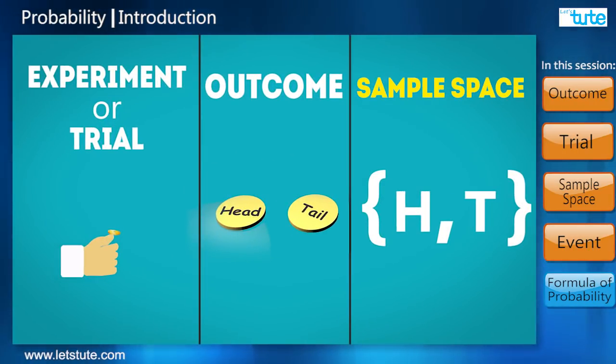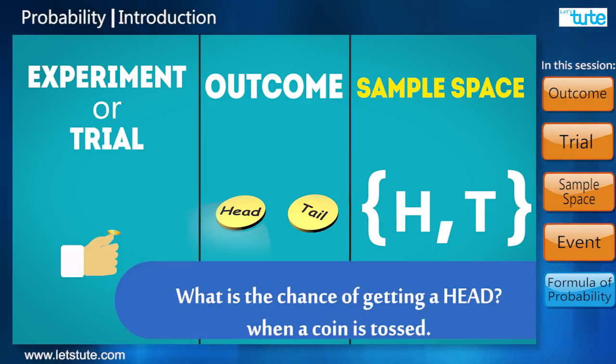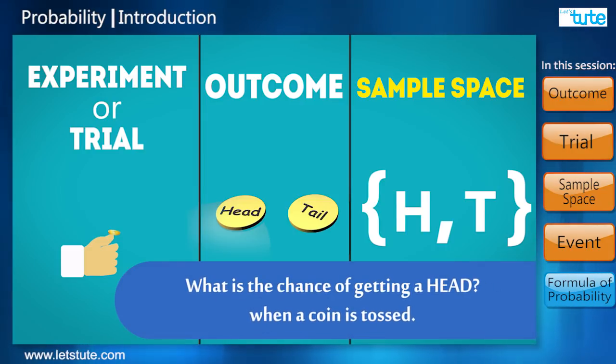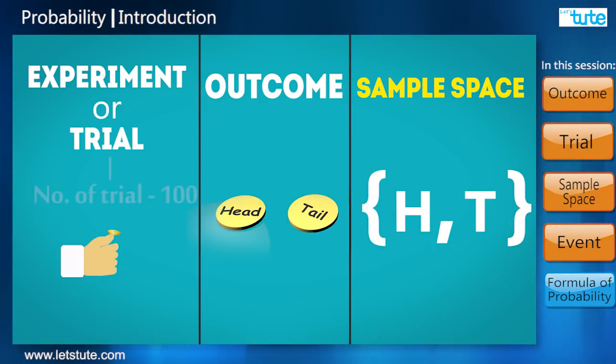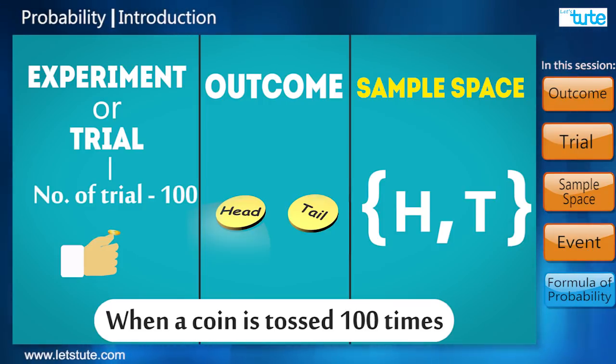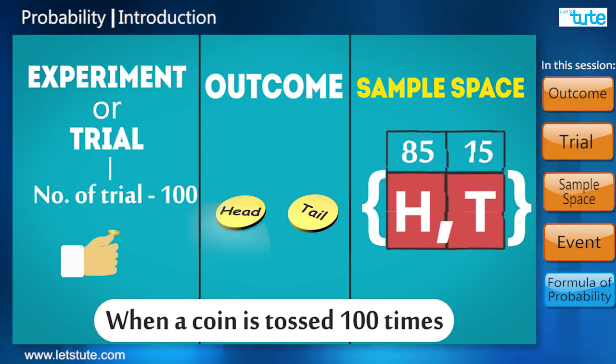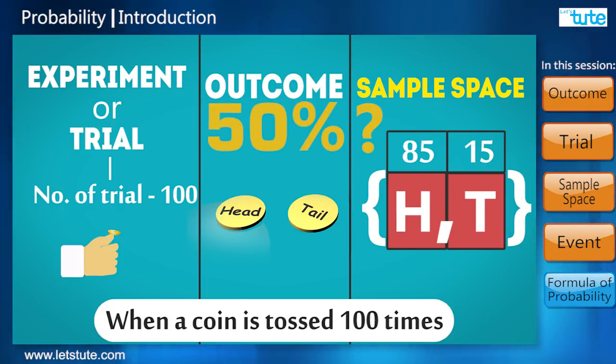By now, if one would ask you what is the chance of getting a head when a coin is tossed, you would simply say 50%, right? But if I tell you when I toss this coin 100 times I got head as an outcome 85 times, will you still say that there is a 50% chance of getting a head? No, right.